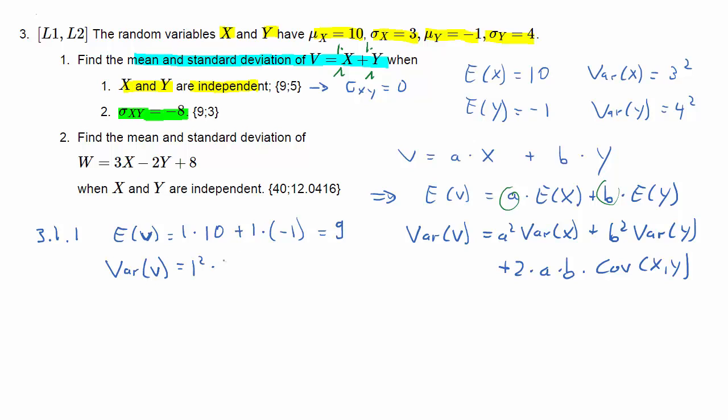The variance is going to be 1² times the variance of X, that's 3², plus 1² times the variance of Y, that's 4², plus 2 times 1 times 1 times 0. And that is because we assumed independence. So the result of this is going to be 9 plus 16 equals 25.